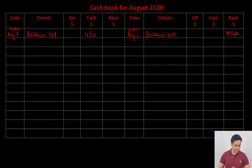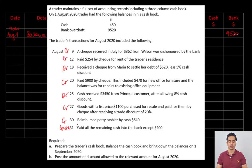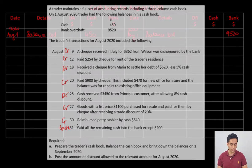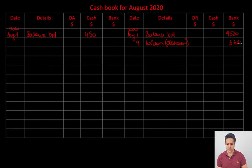August 9: a check of 362 from Wilson, received in July, was dishonored by the bank this month. Whenever a check is dishonored, a reversed entry has to be passed in the cashbook. The original entry of check received was on the debit side, so the dishonored entry goes on the credit side: August 9, details — Wilson (dishonored), amount 362 in the bank column.